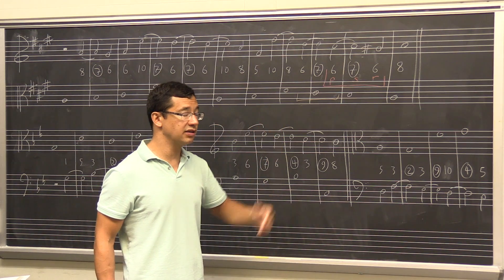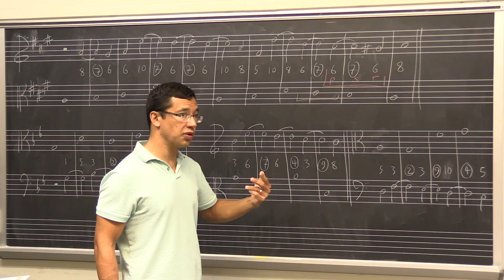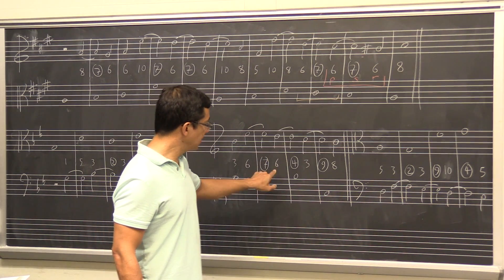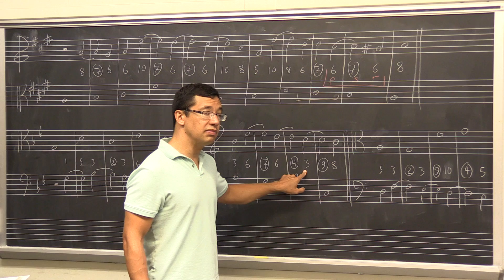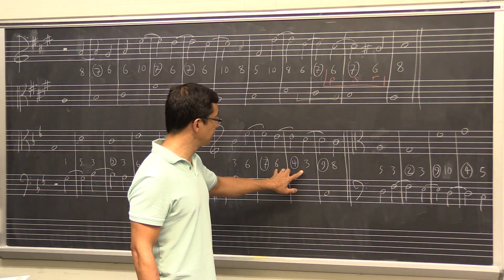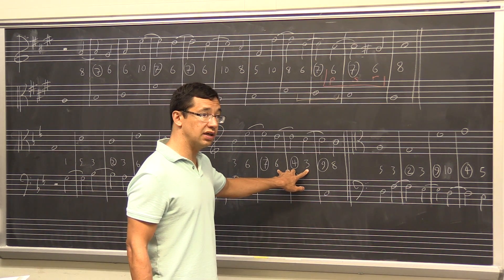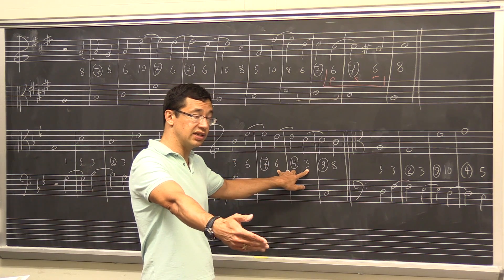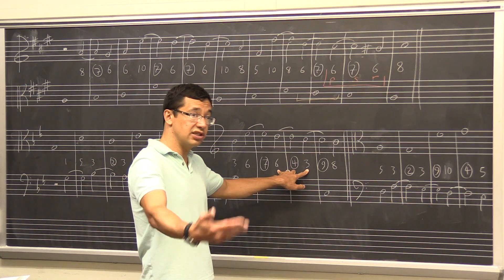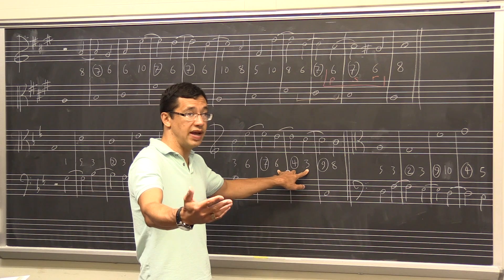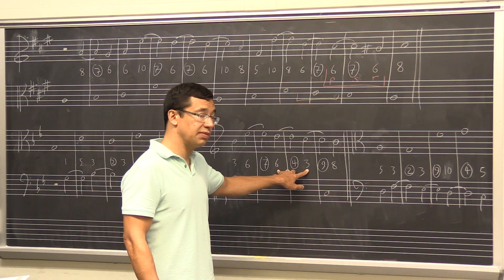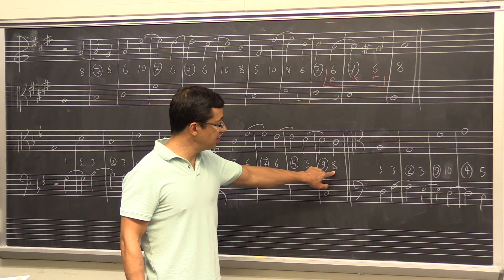If you're writing upper counterpoint, your suspensions are seven-six, four-three, and nine-eight. Seven-six and four-three are the most generally usable because they resolve to imperfect consonances. That means if you have a nice descending stepwise cantus firmus, you can just chain those together up to a maximum of three, as we'll talk about more later.